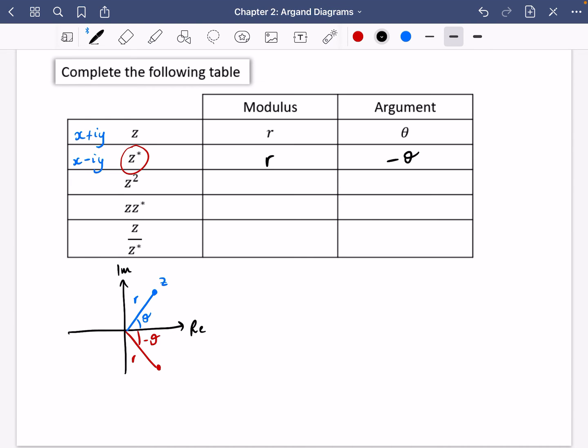So z squared that we've got here. Well, if the argument of z squared, z squared is z multiplied by z, the modulus are going to multiply. So the modulus will be r squared. And the arguments, there'll be theta for this one and theta for this one. So the arguments are going to add and theta plus theta is two theta.